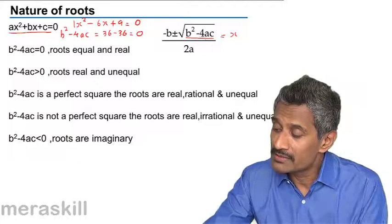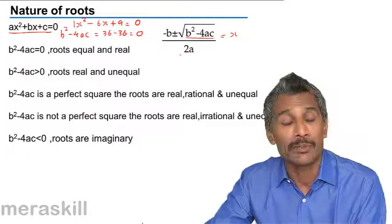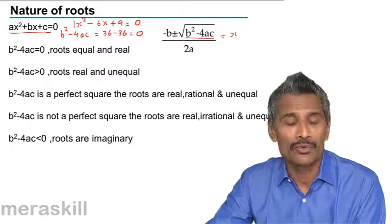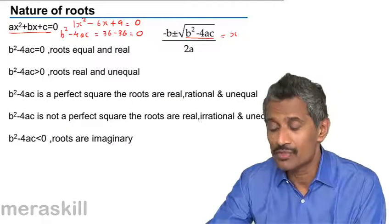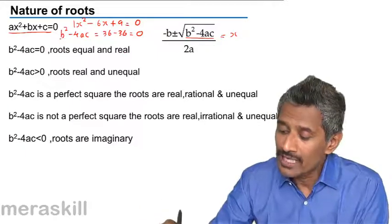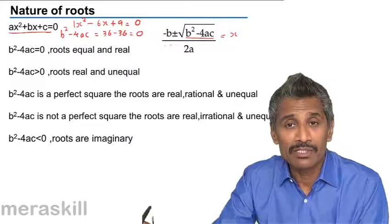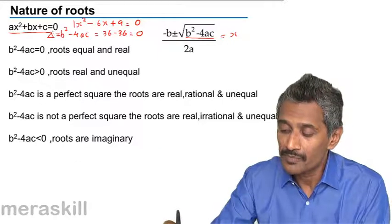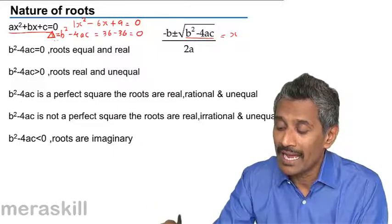Whenever b squared minus 4ac equals 0, this whole part becomes 0. The formula gives minus b plus or minus 0, divided by 2a, which is simply minus b by 2a — just one root. To satisfy the definition that quadratic equations have two roots, we say the roots are equal and real. So whenever b squared minus 4ac equals 0, the roots are equal. The discriminant, represented by the symbol delta, must equal 0, and the roots will be equal and real.